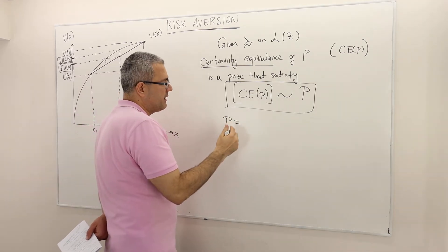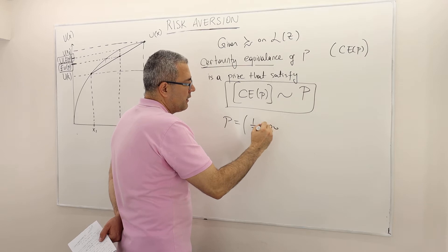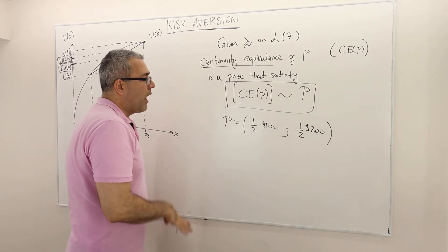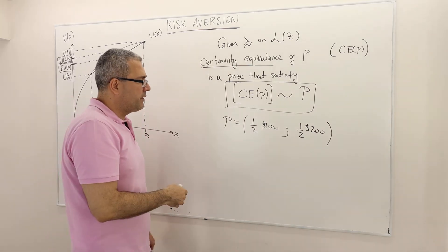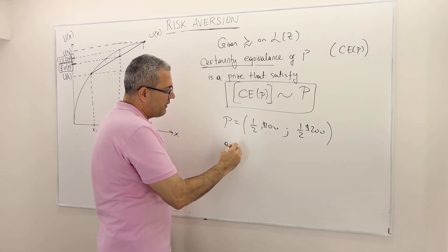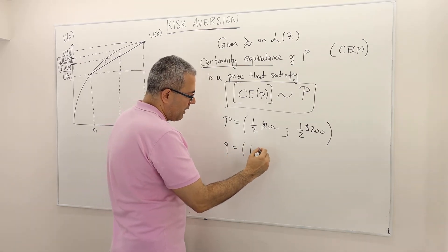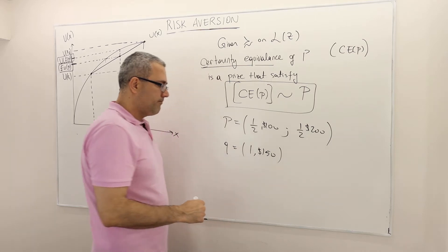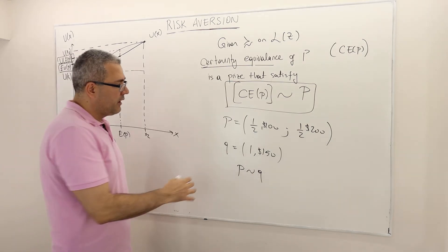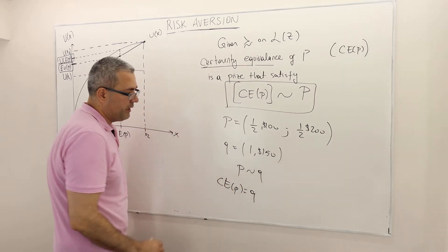Let me give an example. Let's say P is a lottery where we offer one-half probability $100 and one-half probability $200. Suppose I know that if I give this agent another lottery Q where with probability one I offer $150, and this agent tells me that P is indifferent to Q. Then that means the certainty equivalence of P is Q itself — CE(P) is Q.